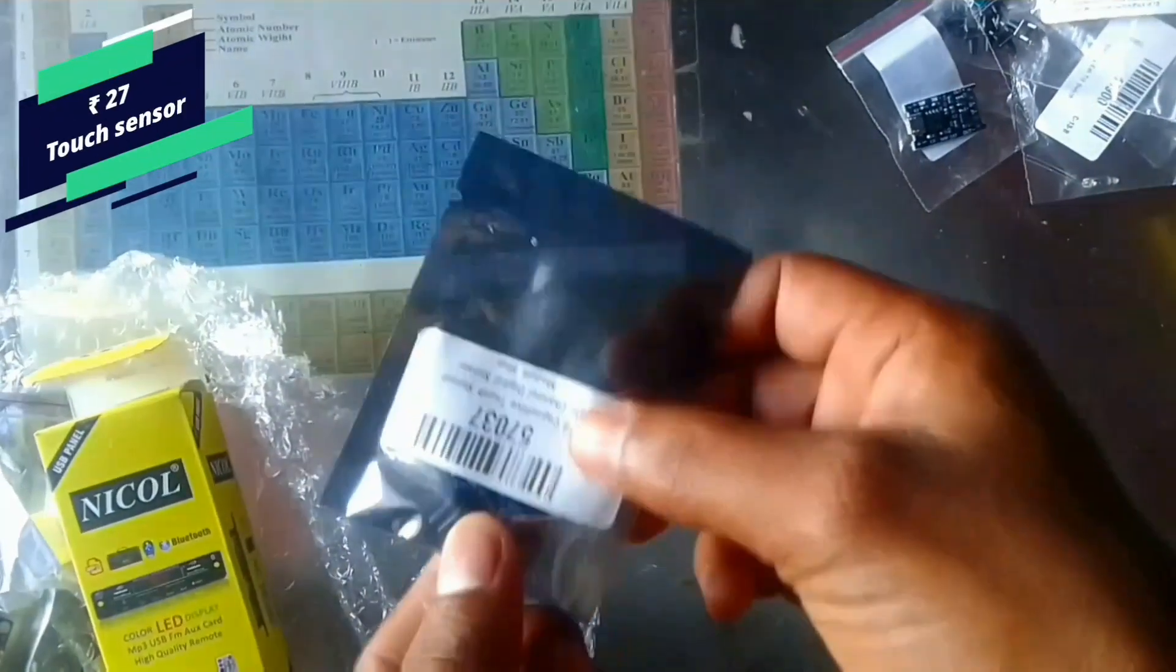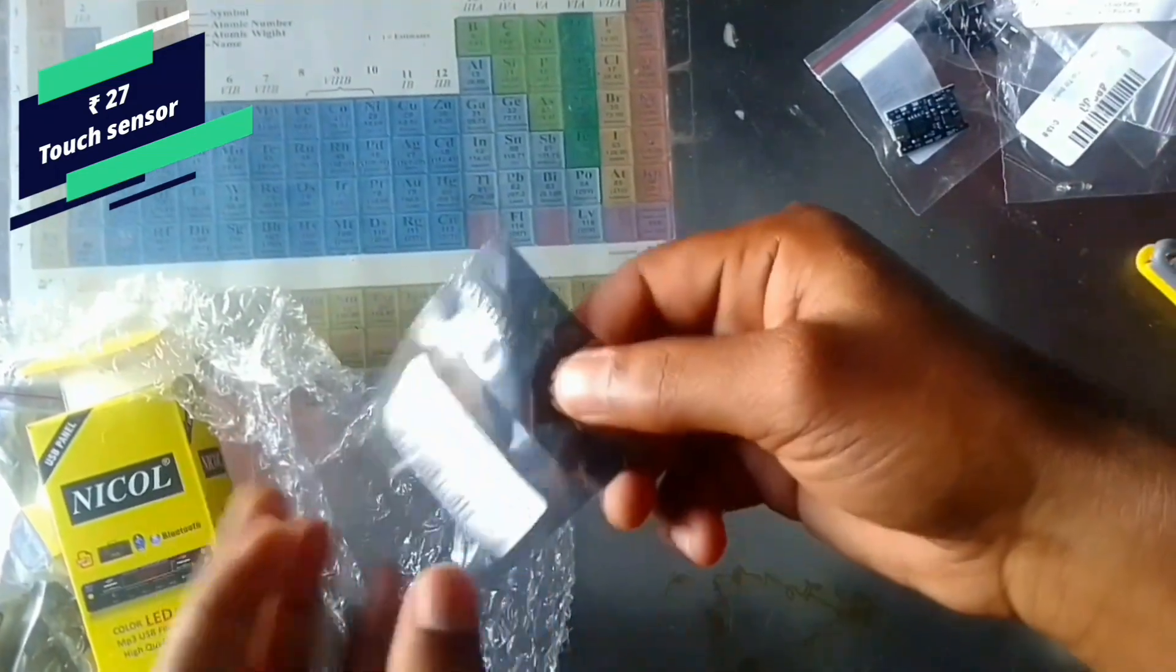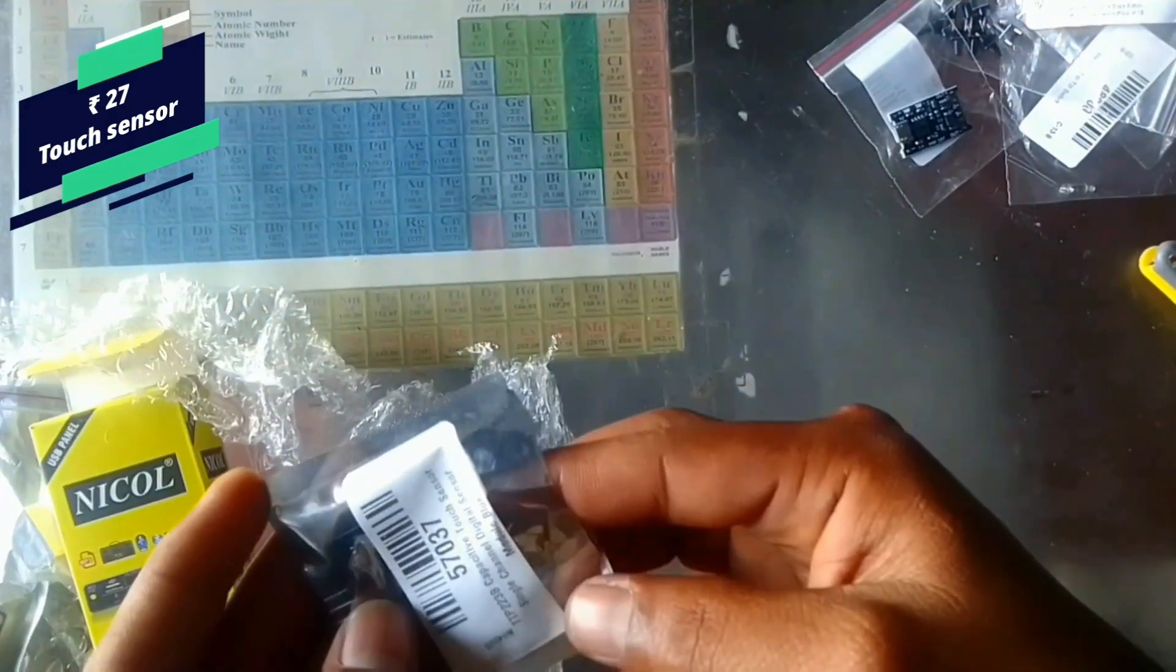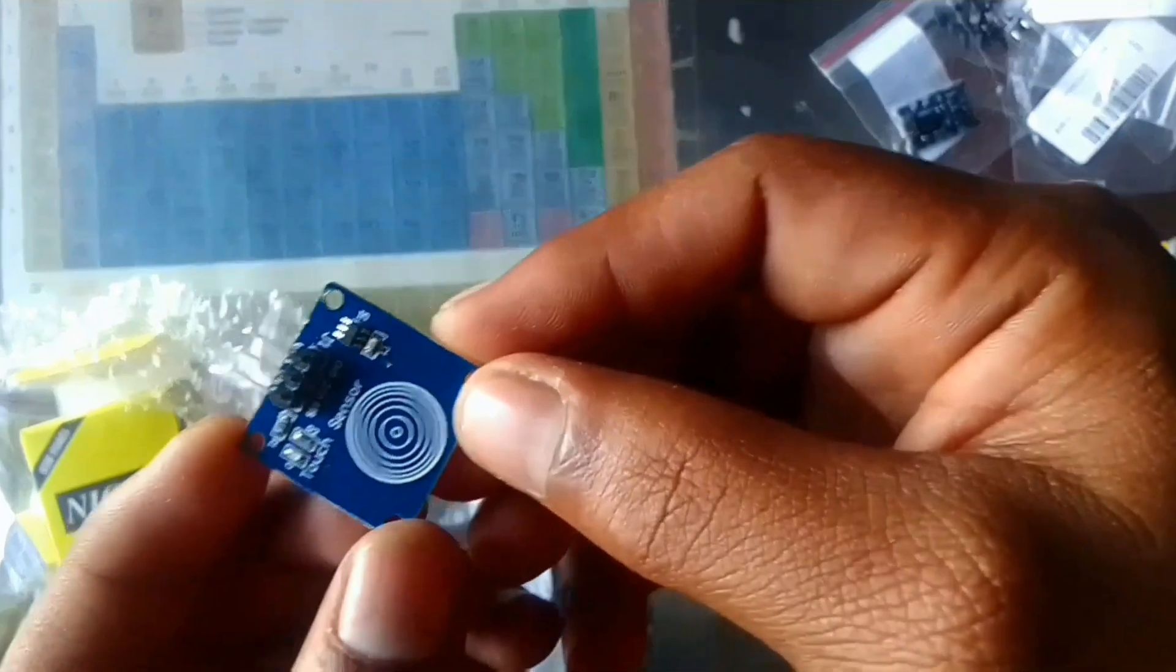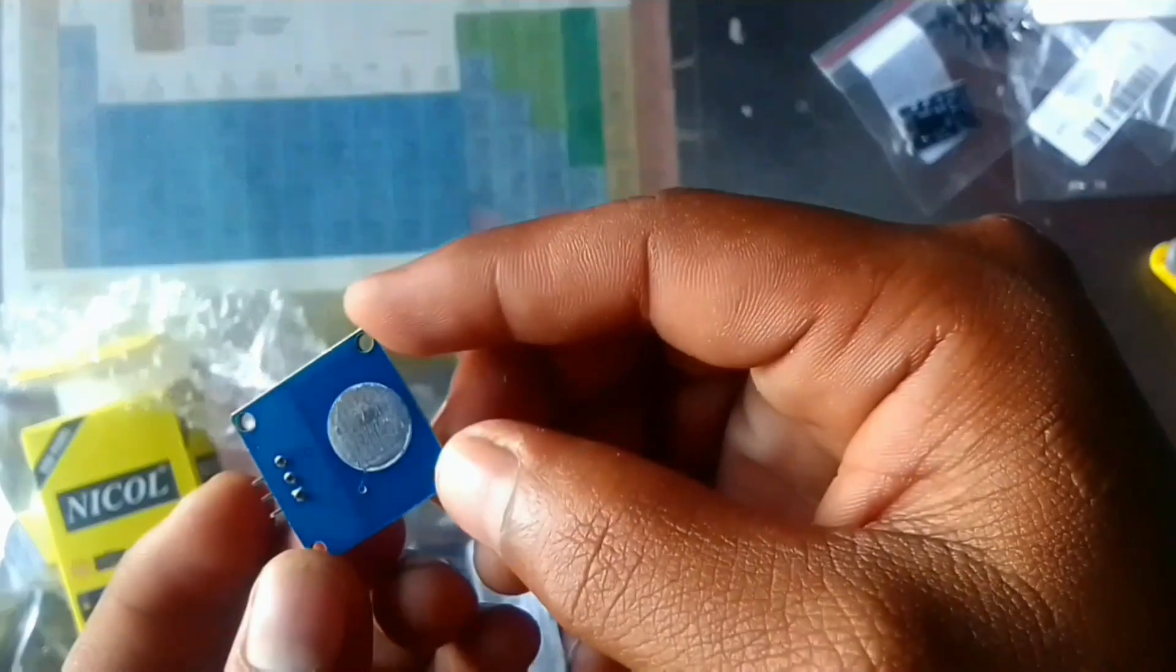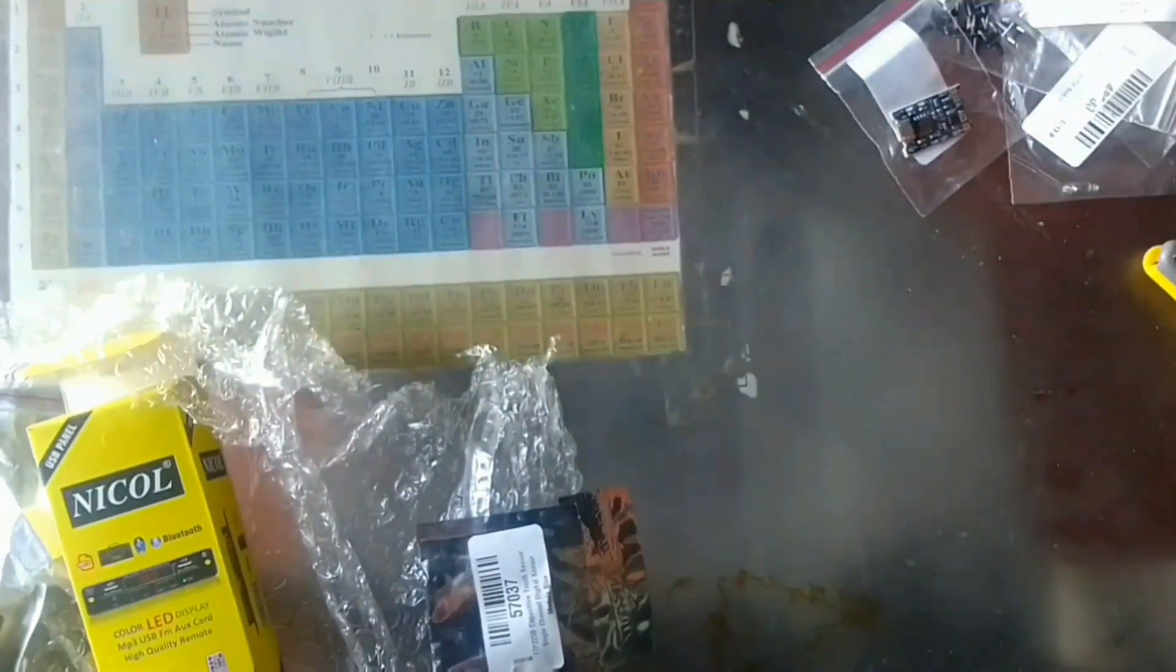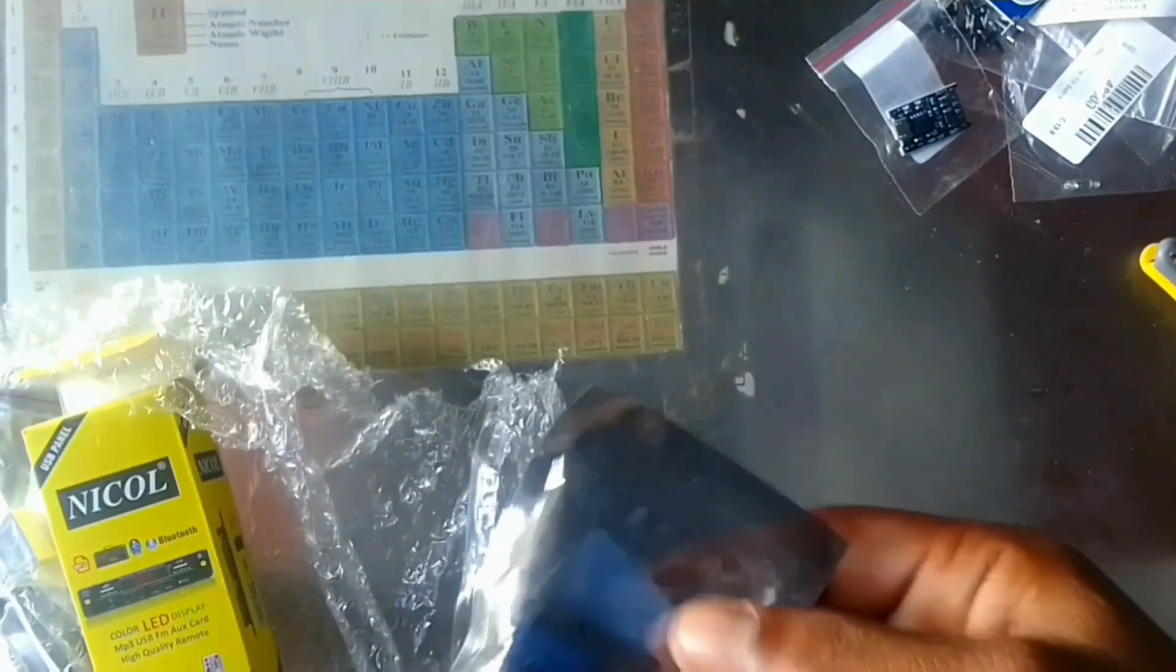And this is the touch sensor module. In Maker Buzzer you can get all these things for least cost. I will do more projects with this touch sensor module in future videos.